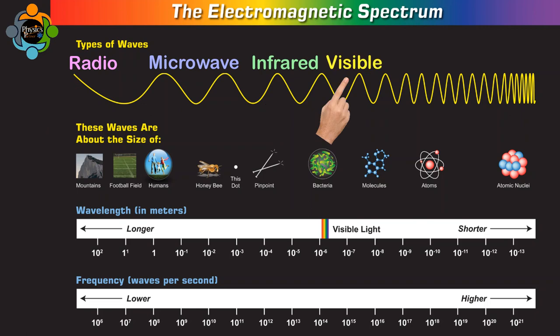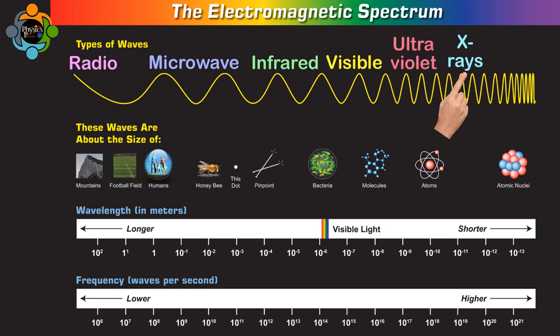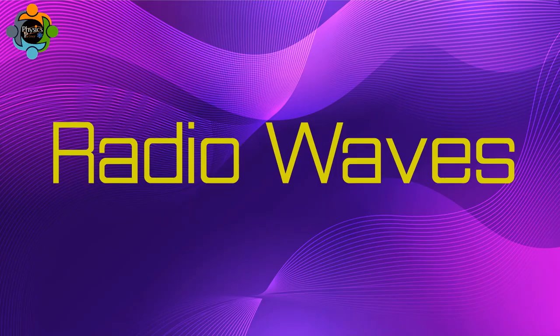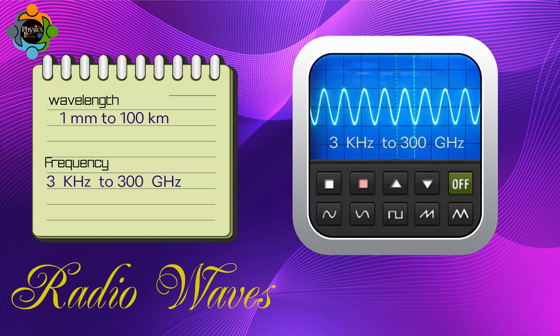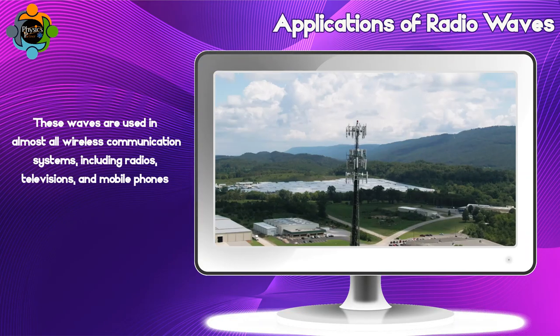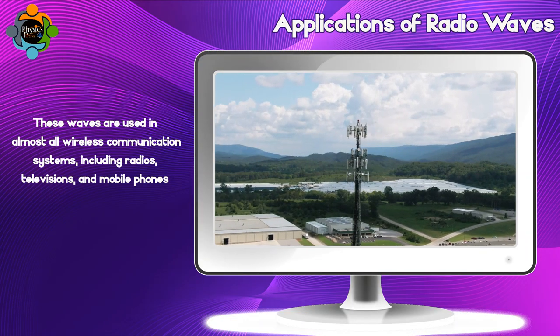The electromagnetic spectrum encompasses radio waves, microwaves, infrared radiation, visible light, ultraviolet radiation, X-rays, and gamma rays. Let's start with radio waves. These have the longest wavelength, ranging from a millimeter to 200 kilometers, and their frequency ranges from 3 kilohertz to 300 gigahertz.